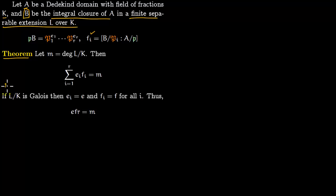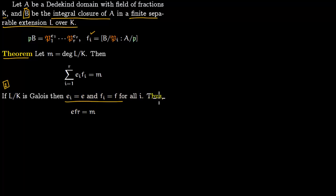So what we want to prove is this: if L over K is Galois, then all the eᵢ's are equal to some common e and all the fᵢ's are equal to some common f for all i. Therefore the sum becomes efr = n, where r is the number of prime ideals above p.